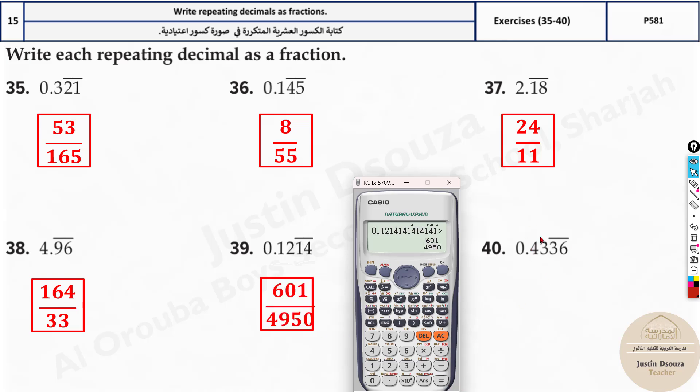That is the answer. And lastly, 0.4336. Only 36 has been repeated, and that would be the answer of 477 divided by 1100.